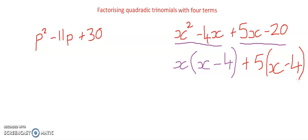Now this shows me that we've got x times in with x minus 4 and we've got positive 5 times in with x minus 4.